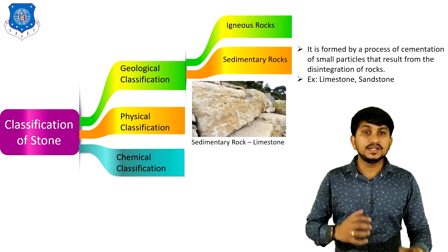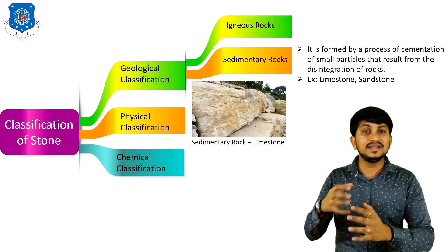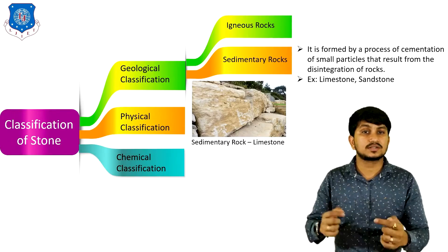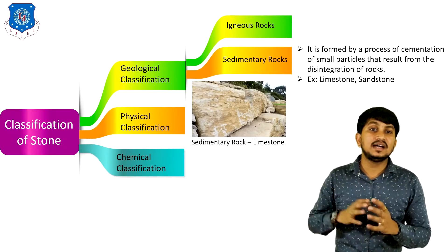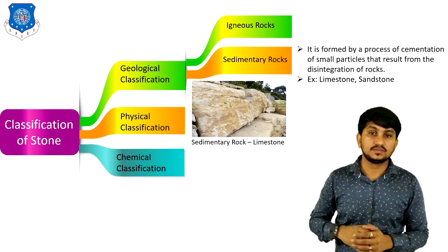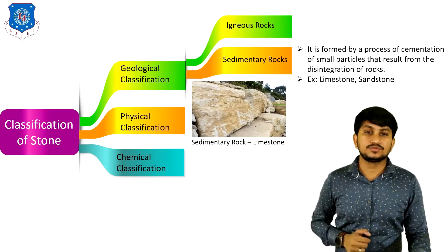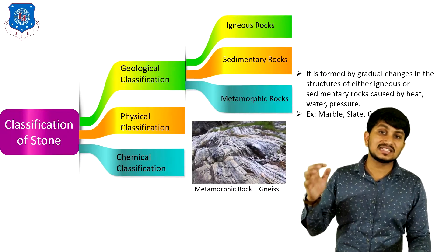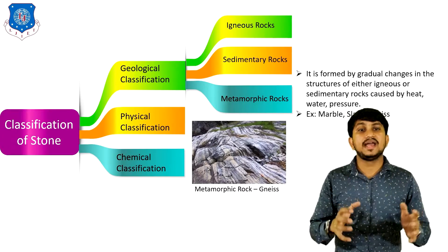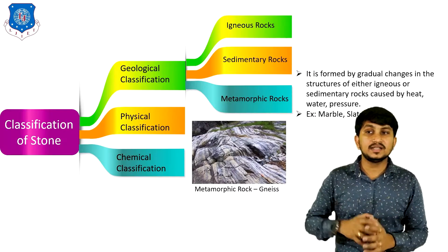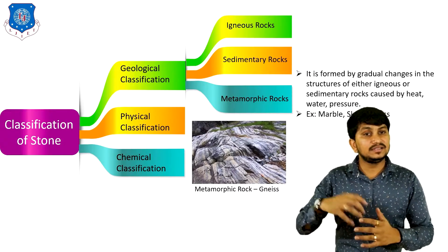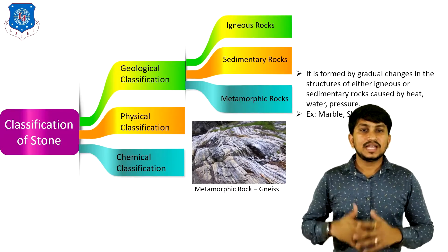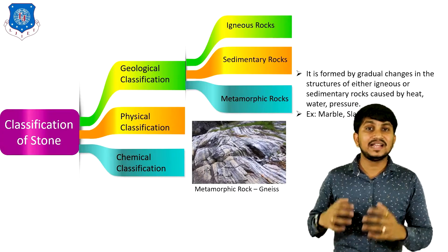The second type is sedimentary rock, which is formed by a process of cementation of small particles that result from the disintegration of rocks. Examples are limestone and sandstone. The third type based on geological classification is metamorphic rock, formed by gradual changes in the structure of either igneous or sedimentary rocks caused by heat, water, and pressure. Examples of metamorphic rocks are marble and slate.